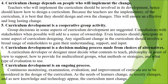Number 6, curriculum development is a decision-making process made from choices of alternatives. A curriculum developer or designer must decide what contents to teach, philosophy or point of view to support, how to provide for multicultural groups, what methods or strategies, and what type of evaluation to use. This includes choices among disciplines, competing views, emphasis, methods, and organization.